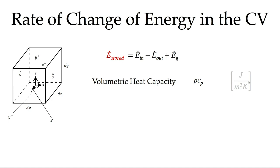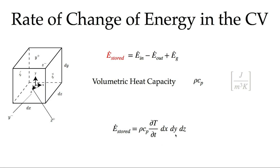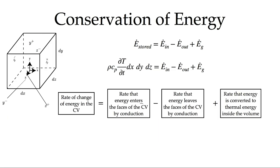With the volumetric heat capacity defined, we can write an expression for the rate that energy is stored within the volume. It's the volumetric heat capacity multiplied by the volume (dx·dy·dz), and we need the rate of change of temperature with time. Dividing by time gives units of watts, and multiplying by the temperature change tells us how much energy was required to change the material's temperature. So the energy storage term is the volumetric heat capacity times the time derivative of temperature multiplied by the volume.